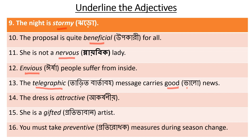Number 14: The dress is attractive. The garment is eye-catching - 'attractive' is the adjective. Number 15: She is a gifted artist. Gifted means talented or protibbhaban. She is a gifted artist - what kind of artist? Gifted - that is the adjective.